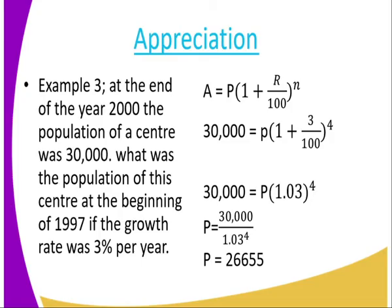Another example: at the end of the year 2000, the population of a center was 30,000. What was the population of this center at the beginning of 1997 if the growth rate was 3%? After substituting into the formula, the population at that time was 26,655.